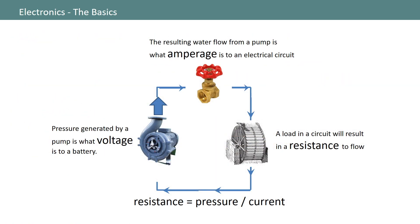Since we already have an understanding of our electrical circuit using water flow, let's add power and work to this explanation. But before we do that, let's do a quick review. We know that pressure generated by our water pump is the same as what voltage is to a battery. The resulting water flow from the pump is what amperage is to an electrical circuit. Also, we know that a waterwheel in this circuit will produce resistance to flow, which is the same as a load in an electrical circuit.